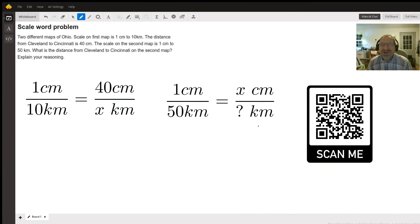Good evening, Tutor John here with a question about scale, in particular the scale of two different maps of Ohio. On the first map, the scale is one centimeter to 10 kilometers, and the distance from Cleveland to Cincinnati on this map is 40 centimeters. On the second map...